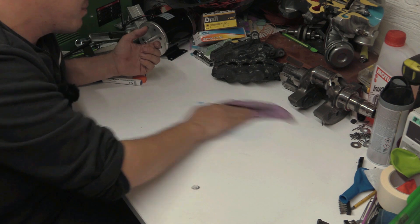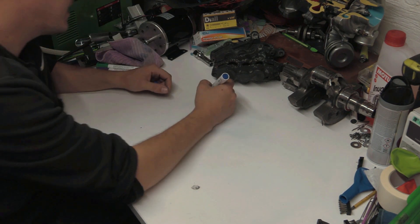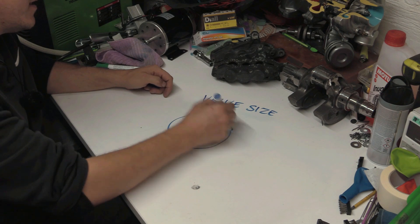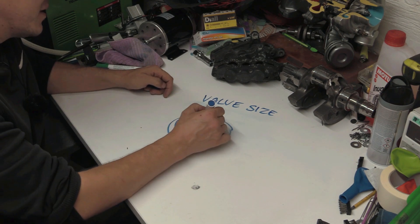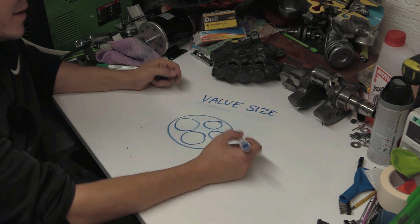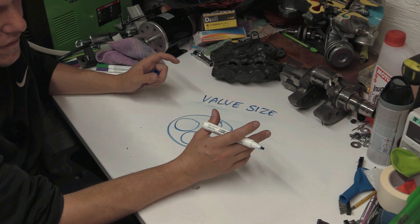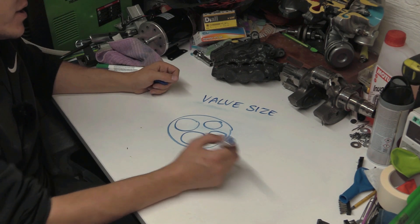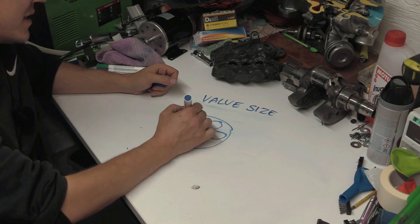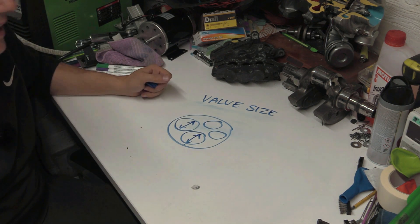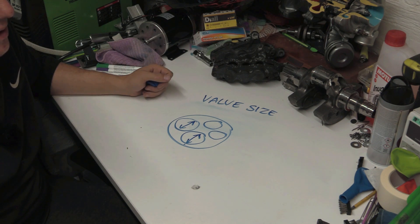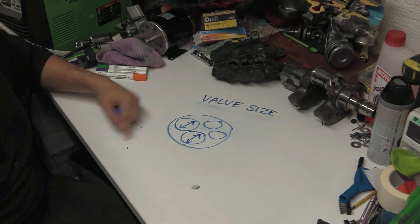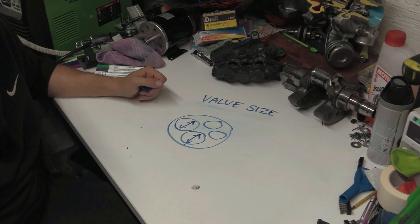Let's start with valve size. Valve size is predetermined by how many valves you're willing to fit. Let's stick with a four-valve cylinder - inline four, V-twin, whatever. You want them to be as big as you can get them. That's just it. You want the maximum amount of flow, and with high-revving engines, flow is hard to come by at very high revs.